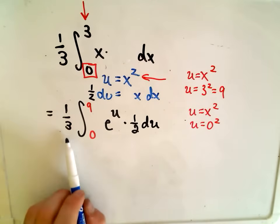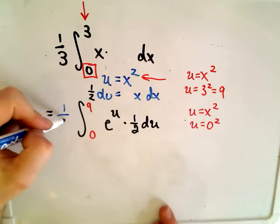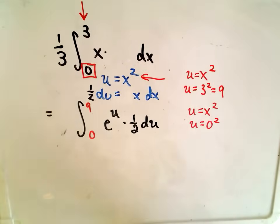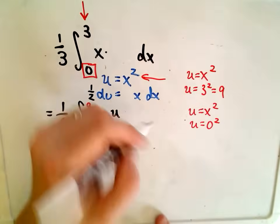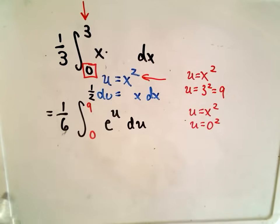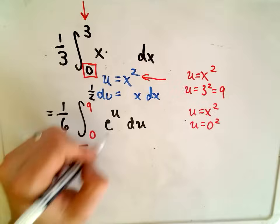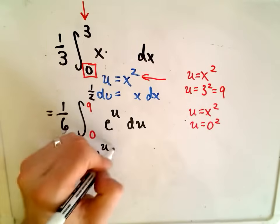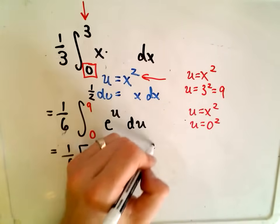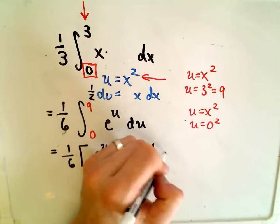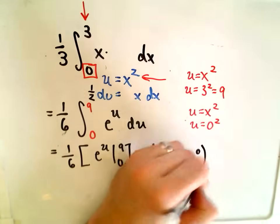Since we're multiplying, we can factor the one-half out. One-third times one-half is going to give us one-sixth. We'll be one-sixth, so we pull the one-half out. And now we're simply integrating e to the u du. Almost there. We get one-sixth. The integral of e to the u is e to the u from 0 to 9. Plug in your limits of integration. We'll get one-sixth times e to the 9 minus e to the 0.